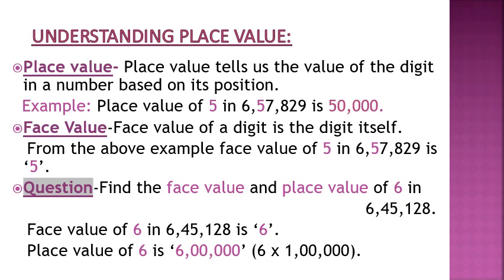Understanding place value. First, let us know what place value is. The place value is the value of a digit in a given number. Place value tells us the value of a digit in a number based on its position. For example, the place value of the digit 5 in the number 6,57,829 is 50,000. Children, make a note here: we are not writing the place value of 5 as simply 5, nor as 10,000. Since the place of the digit 5 is the ten-thousands place, we write its value in the number as 50,000.